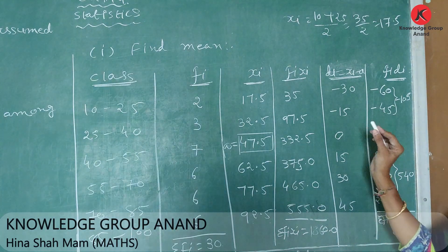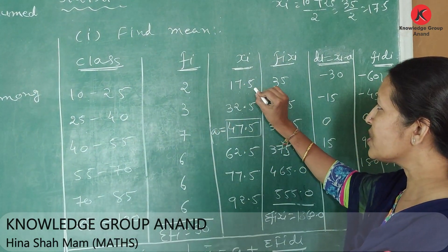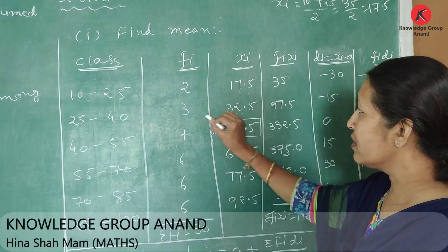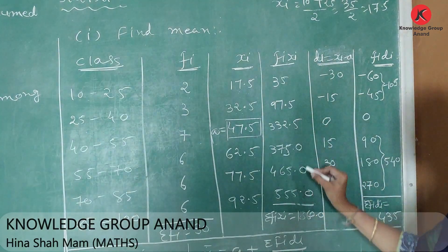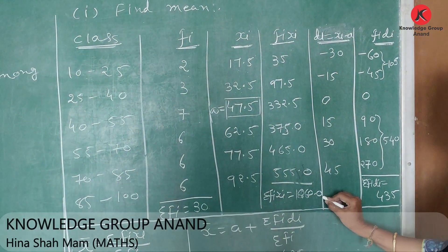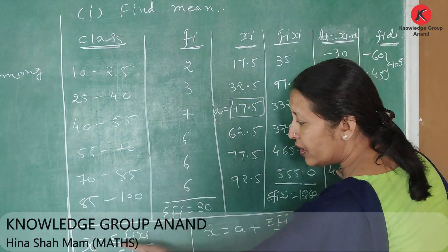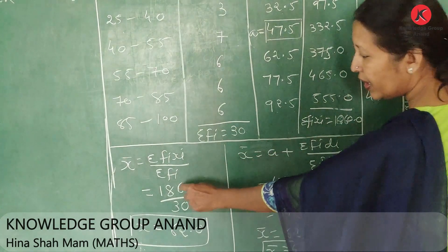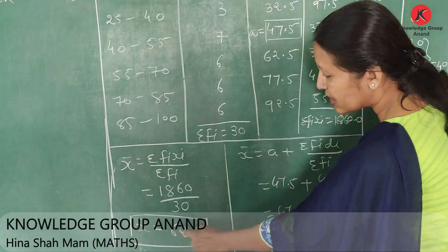First we find fi·xi. fi is 2 and xi is 17.5, so 2 times 17.5 equals 35. Then 3 times 32.5 equals 97.5, and so on. Sigma fi·xi equals 1860. Using the direct method, x̄ equals sigma fi·xi upon sigma fi, which is 1860 divided by 30, giving x̄ equal to 62.